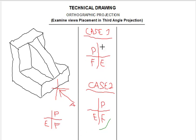How do we get case one? If the direction of view of the component is changed — if we change the position of the arrow showing where we are viewing the component — then the placement of the views will also change. It's not going to be the same.